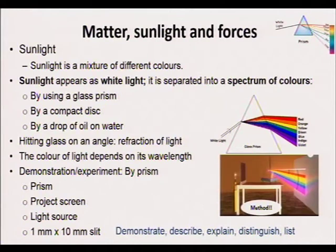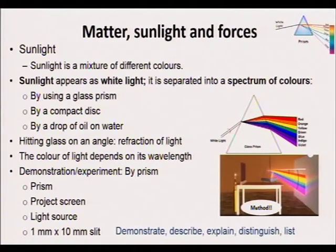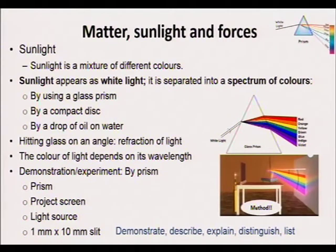You should be able to demonstrate how to use a prism to separate white light into different colors. Position the projector and place the light source at 90 degrees on one side of the prism. The beam of light goes through the slit, and a narrow beam falls on the side of the prism. It then reflects on the reflecting side of the prism and separates into different colors. Make sure you understand the method of how to separate white light into different colors using the prism, then list the materials and explain how you would demonstrate this to learners.